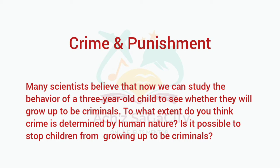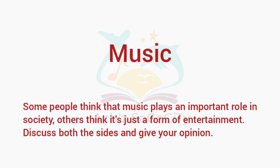Next topic: Crime and Punishment. Many scientists believe that we can study the behavior of a three-year-old child to see whether they will grow up to be criminal. To what extent do you think crime is determined by human nature? Is it possible to stop children from growing up to be criminals? This is again a two-part type of question.